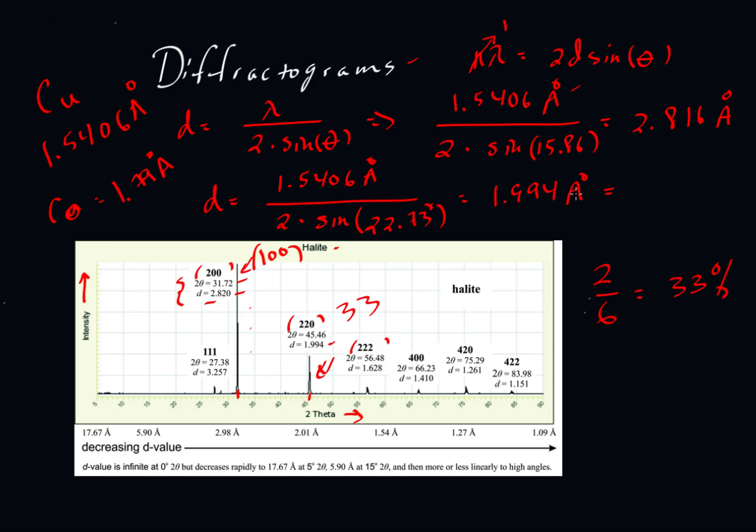So we would call it something on the order of 33. So when you see peaks listed next to the d-spacing, let's say a 1.994 or a 2.816, then this would be called the 100 peak, and this guy would be something close to, let's say, a 33 peak. The 33 value meaning that its height, its intensity is expected to be about 33% of the height of the 100 value.